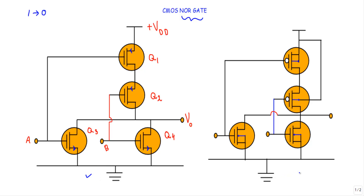This is the circuit structure of the CMOS NOR gate using the four-terminal schematic symbol of MOSFET. Here you will see we have two P-type MOSFETs — Q1 and Q2 will be P-type enhancement MOSFETs, and Q3 and Q4 will be N-type enhancement MOSFETs.